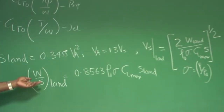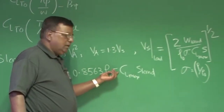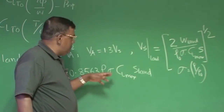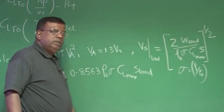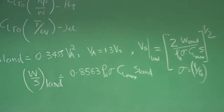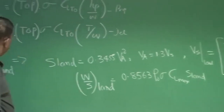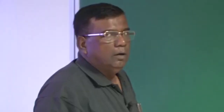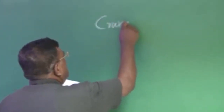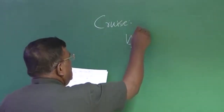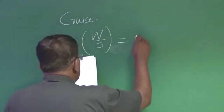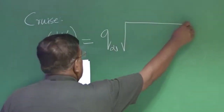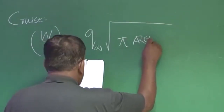This clearly tells you what the density ratio is at the altitude where you are going to land, what the CL_max value is, and what the runway length is within which you want to bring the aircraft to a stop. So this is W/S landing, this is W/S takeoff. After that, we also discussed about cruise, where W/S for cruise is equal to Q_infinity × sqrt(pi × AR × E × CD0).